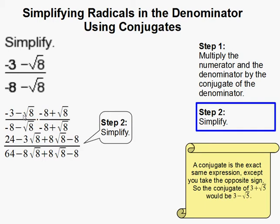Negative square root of 8 times negative 8, plus 8 root 8. And then negative square root of 8 times positive square root of 8 is just negative 8. So I did the same thing down here.